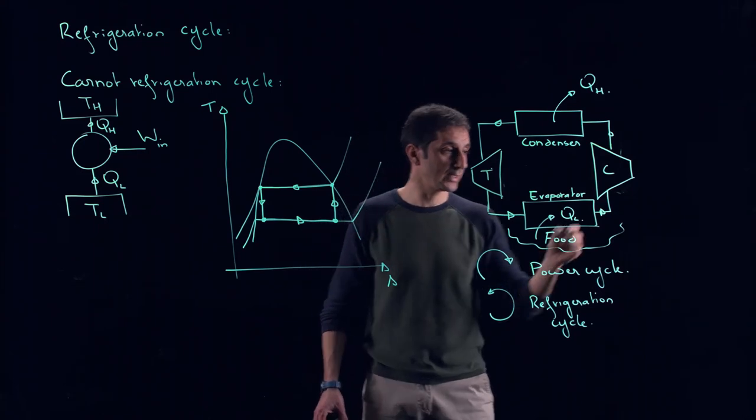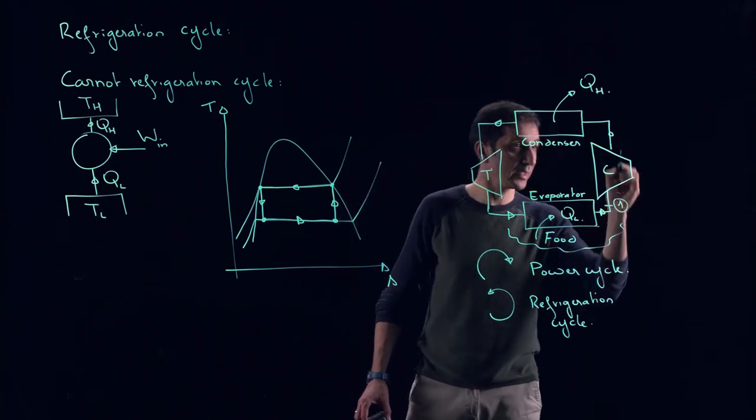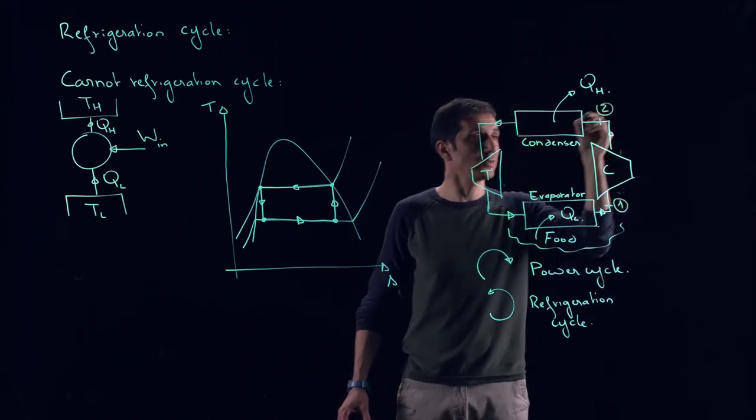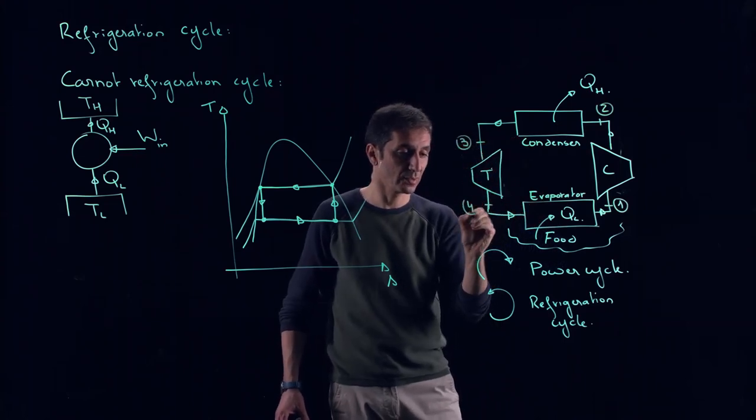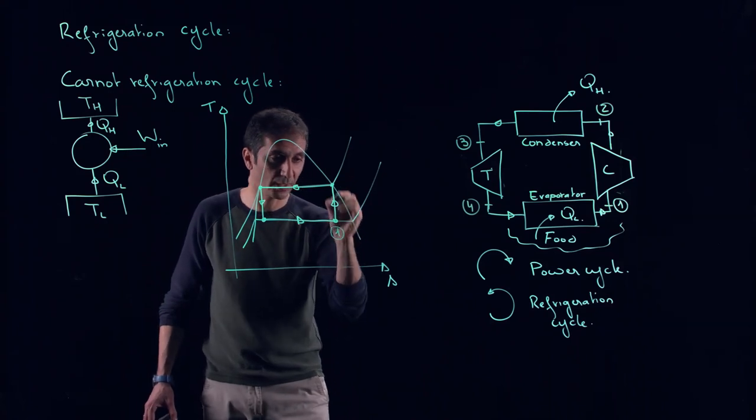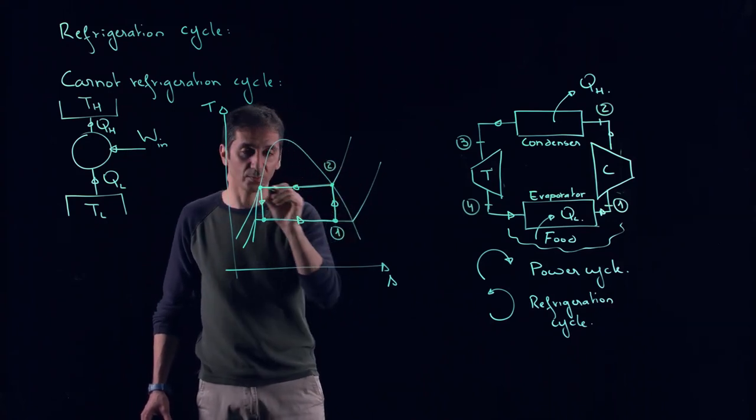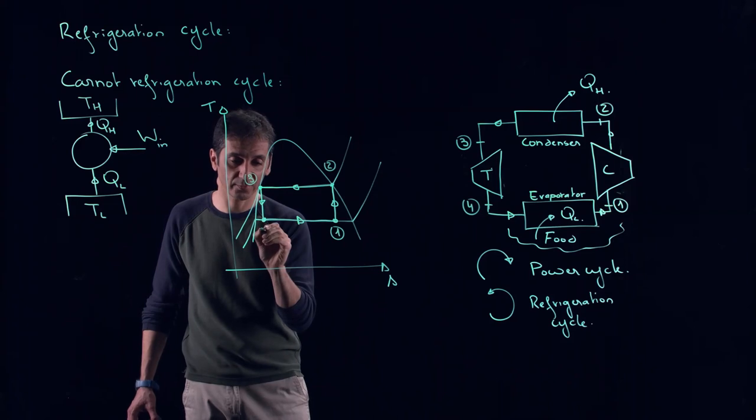First thing. If we label this state one, state two, state three, and state four, so this will be state one, state two, state three, and state four.